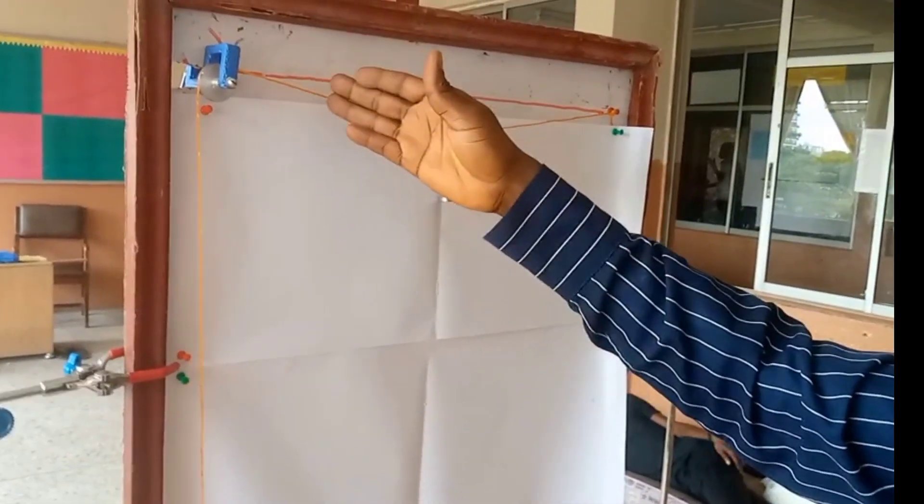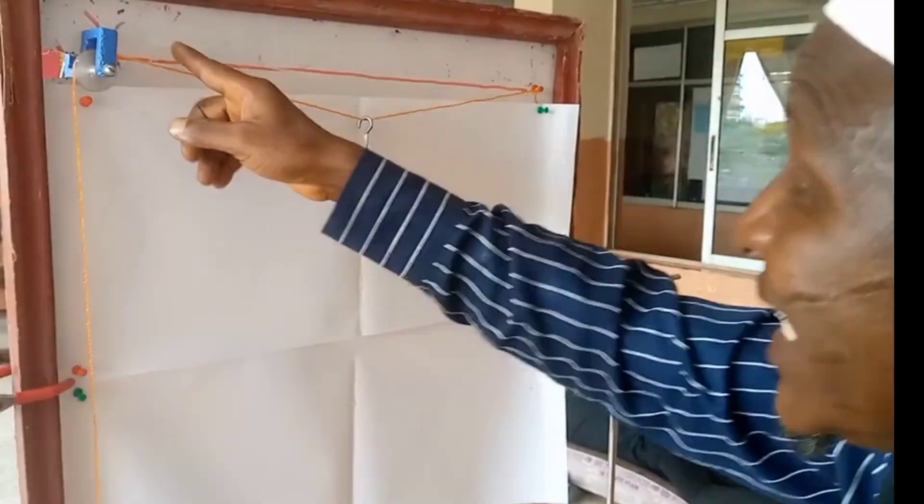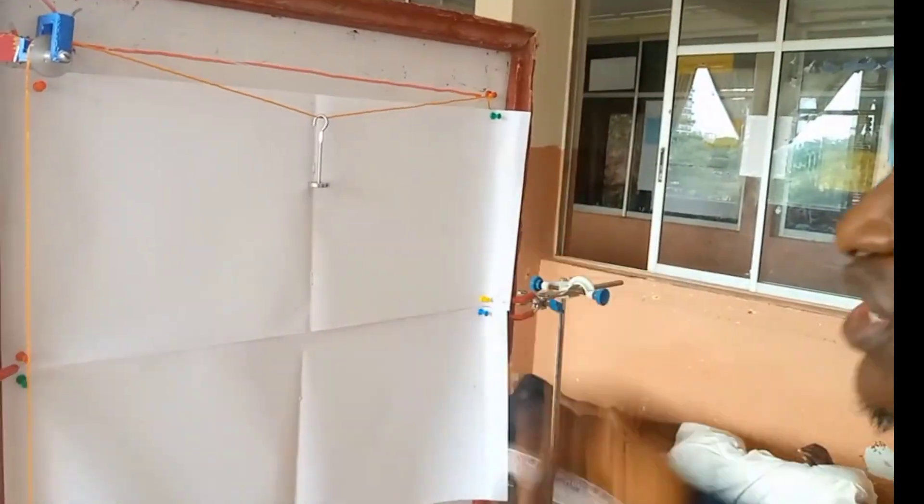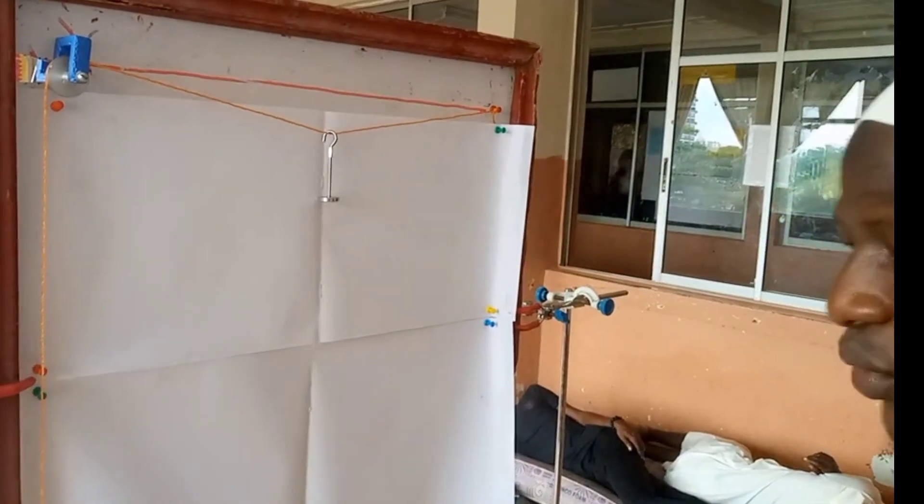Then you are going to measure this angle. Then you measure this one too. So once you get this angle and this angle, you don't need to stretch yourself to calculate this one. Just subtract the sum of it from 180 degrees because it will form a triangle.